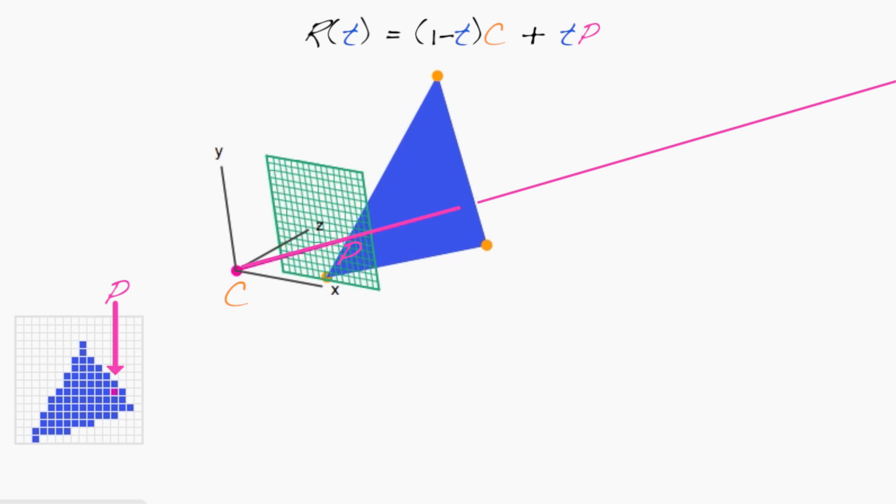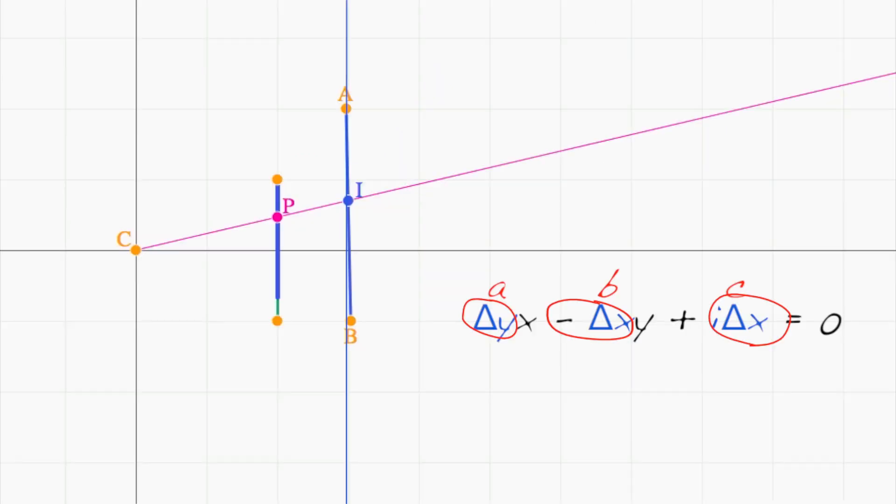Remember that in the previous video, we saw that in two dimensions, every line can be written in implicit form as ax + by + c = 0.